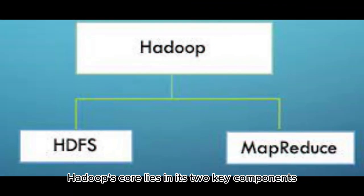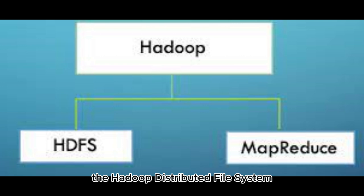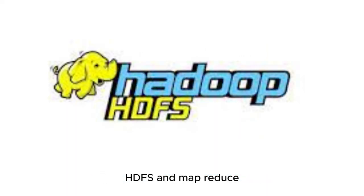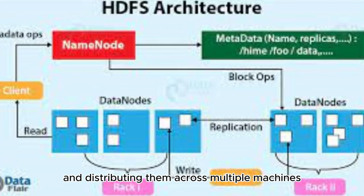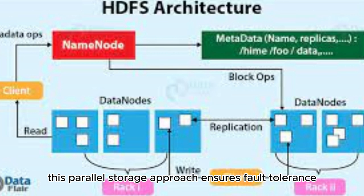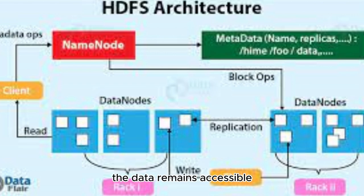Hadoop's core lies in its two key components, the Hadoop Distributed File System, HDFS, and MapReduce. HDFS acts as a scalable storage solution, breaking down large data sets into smaller chunks and distributing them across multiple machines within a cluster. This parallel storage approach ensures fault tolerance. Even if one machine fails, the data remains accessible.